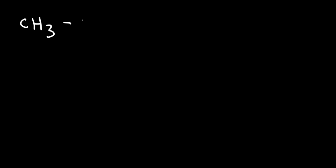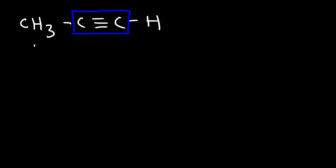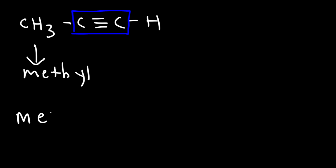Let's try another example. Here we have the acetylene portion of the molecule, which is the C triple bond C part. Notice that we have a methyl group in front. So therefore the common name for this alkyne is simply methyl acetylene.